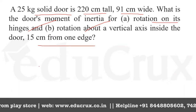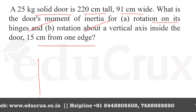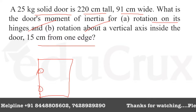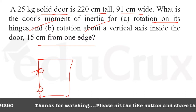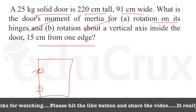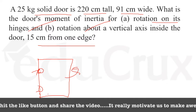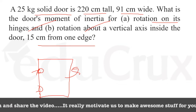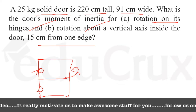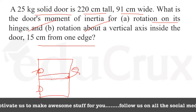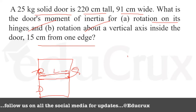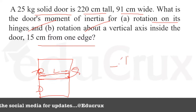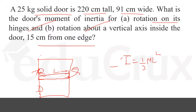First, we'll draw the door. The door has two hinges. If we are rotating around the hinges, this door works like a rod. If this is the length and you are rotating at one end, the moment of inertia is 1/3 × m × L².